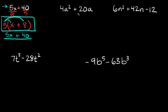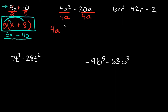Next we have 4a squared plus 20a. What's the biggest number or term we can pull out from both? Starting with the numbers, we can pull out a 4 from both sides — that's the biggest number. But that's not the only thing we can pull out, because we also have 'a' terms in common. Here we have one 'a', and over here we have two 'a's. So we can pull out at least one 'a' from both sides.